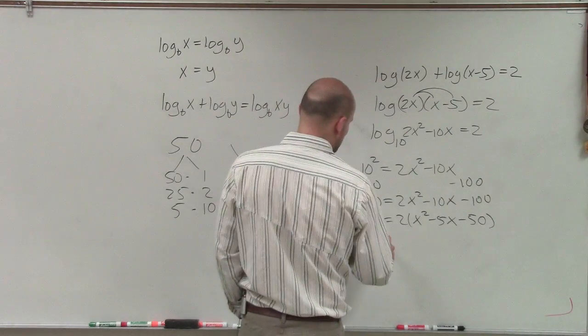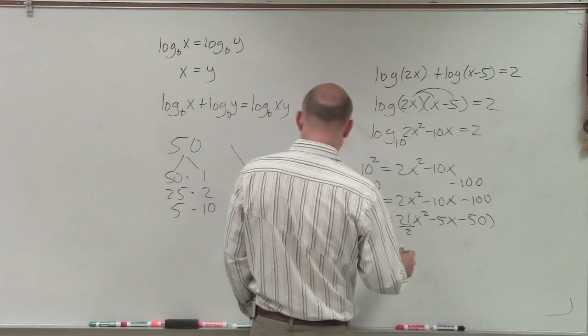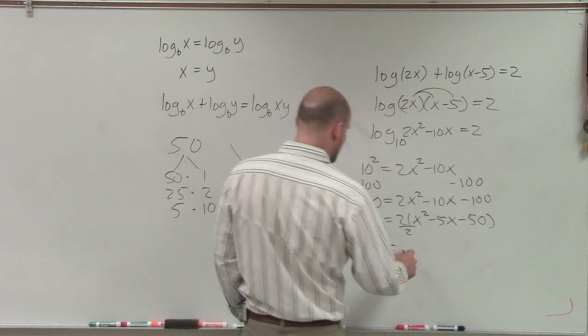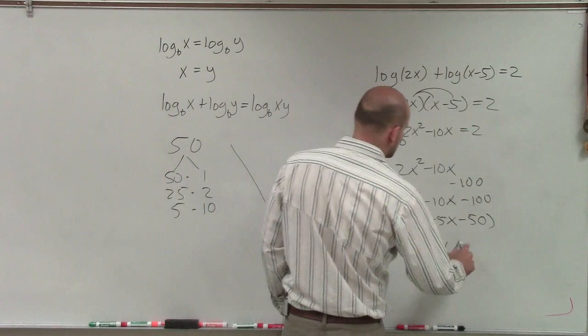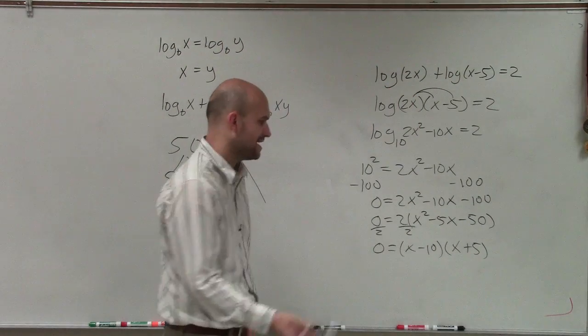So if I factor this out, I can divide out the 2 here. So therefore, 0 equals, let's see here, I'm going to have to do x minus 10 times x plus 5. And we can double check that by applying FOIL.